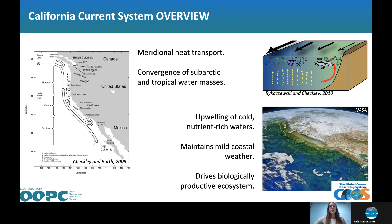The California Current System is a very vast current system. It spans the west coast of the United States and a bit beyond — from border to border, and also into Canada as well as Mexico. In the horizontal, we care about this current system because of the meridional heat transport. We have a convergence of water masses in the mid-latitude CCS: subarctic water comes down in the California Current — this white arrow here offshore — and tropical water masses come up along the coast in the California Undercurrent, shown as this dashed line.